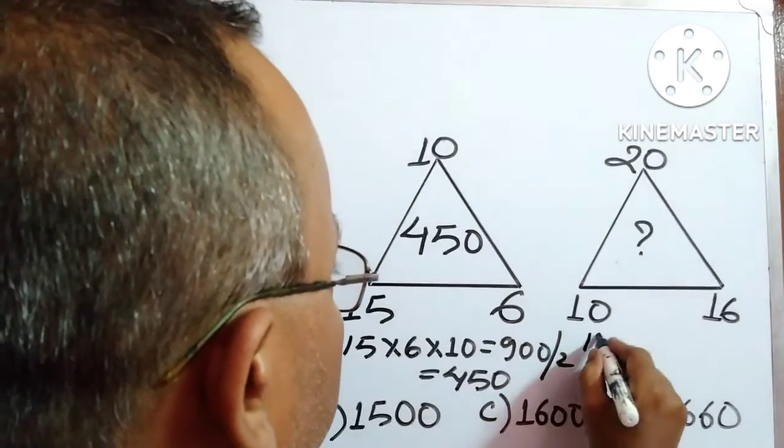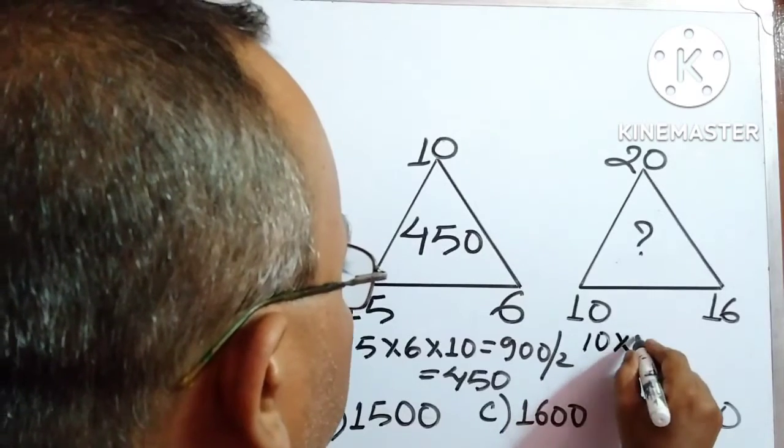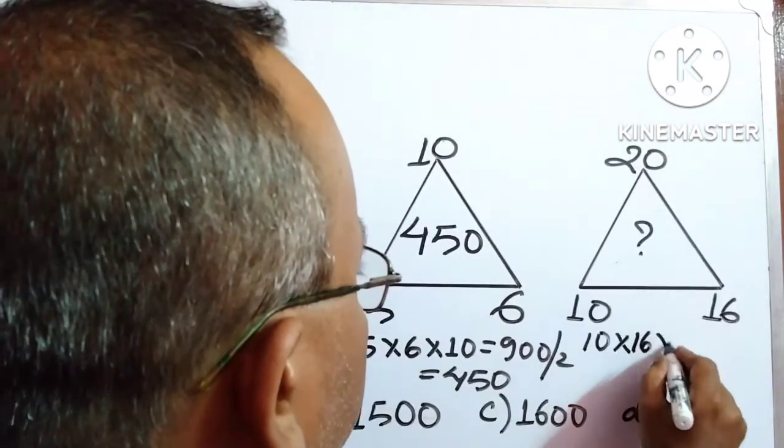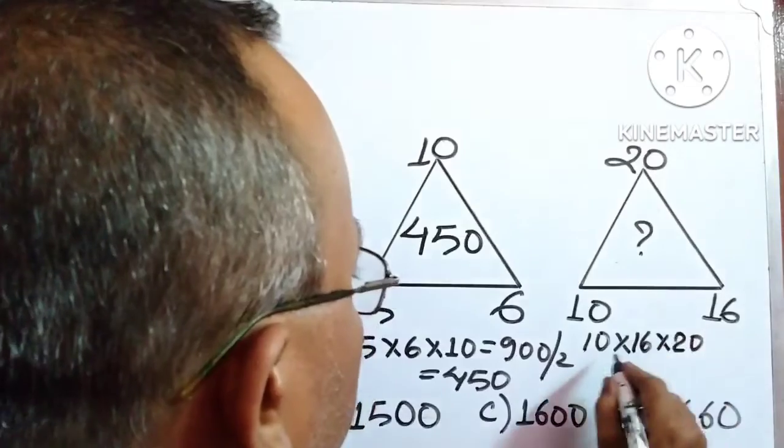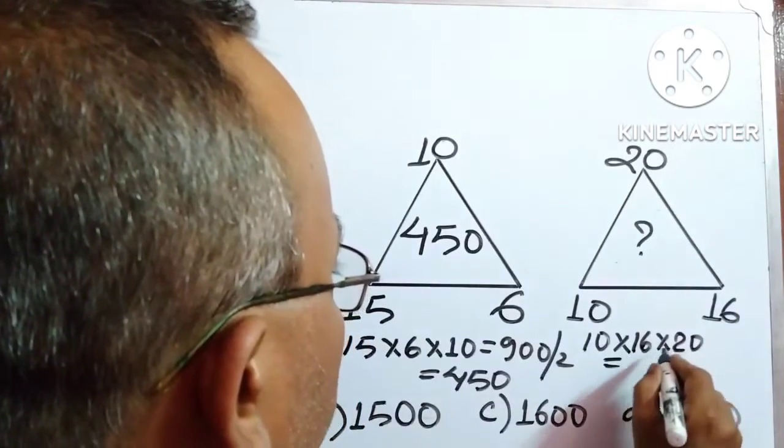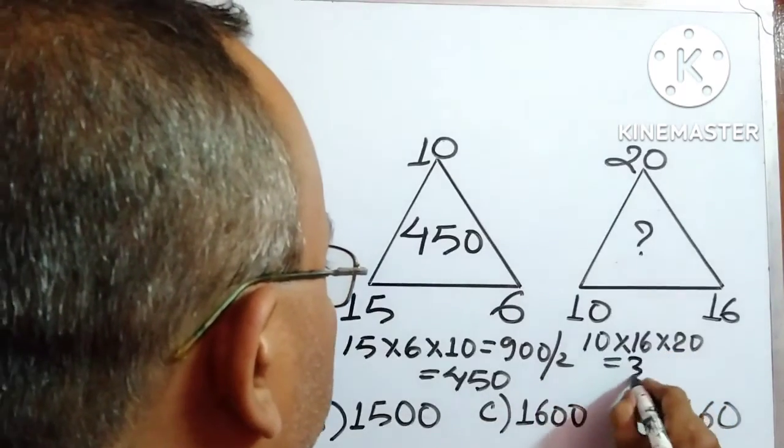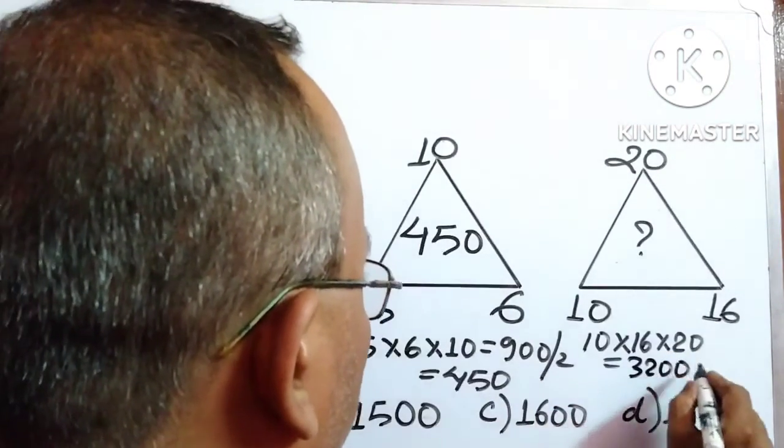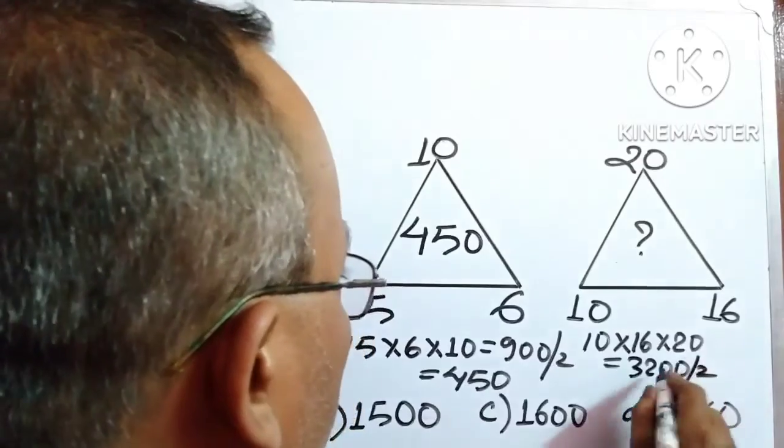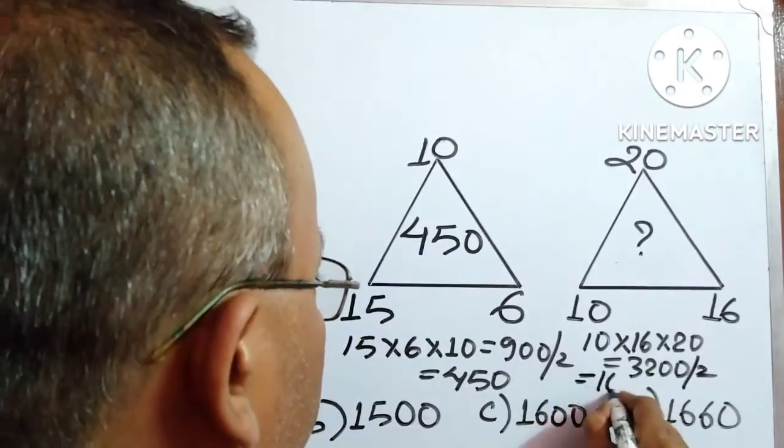So, 10 into 16 into 20 comes to how much? 16 into 2 is 32 and 0. That means 320 into 10 means 3200 divided by 2. So, how much it will come? 1600.